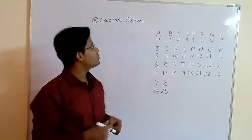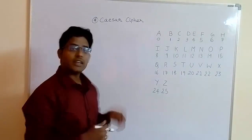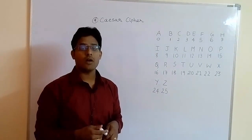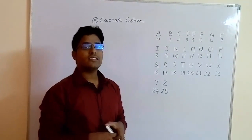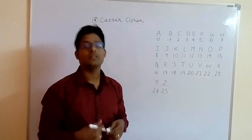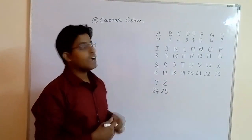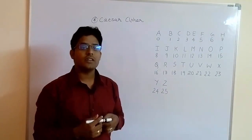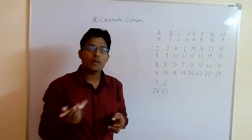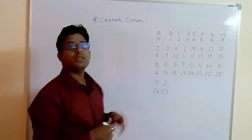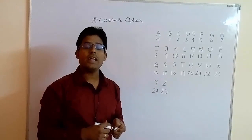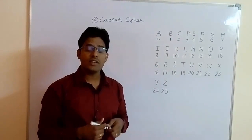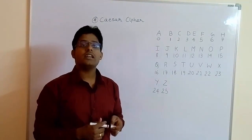Today we are going to start with the Caesar cipher technique. Caesar cipher is the oldest technique, used by Julius Caesar for his private correspondence. The fundamental of all encryption techniques we are going to study is that we convert plain text into cipher text. Now you might ask: why do we need to convert plain text into cipher text?